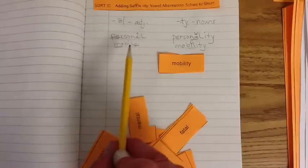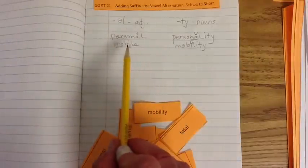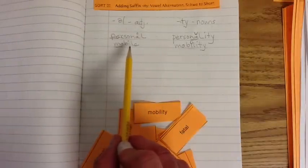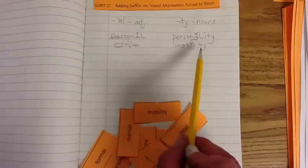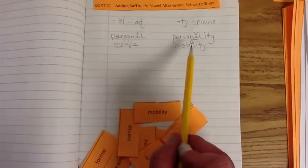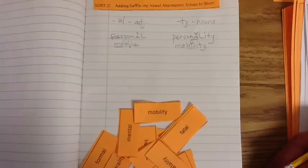Let's go ahead and see if we can't pick out where the sound changes. Mobile. Mobile. Mobility. Mobility. Here we have the short vowel sound. Mobility. Schwa. Short. Interesting. Pretty cool.